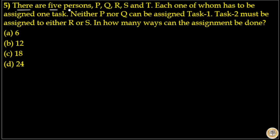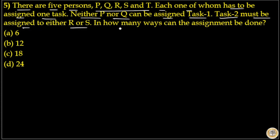There are 5 persons P, Q, R, S and T, each one of whom has to be assigned one task. Neither P nor Q can be assigned task 1. Task 2 must be assigned to either R or S. In how many ways can the assignment be done?